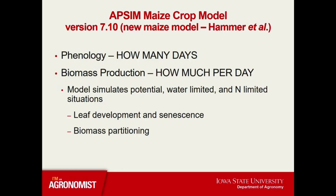There are four important physiological components of this maize model. One is phenology, which is essentially how many growing degree days it takes for a crop to grow from stage to stage. The second being biomass production, which is essentially how much carbon is accumulated per simulated day. The model will calculate biomass production under potential, water-limited, and nitrogen-limited conditions.